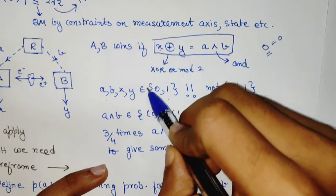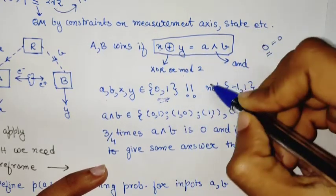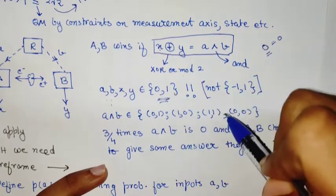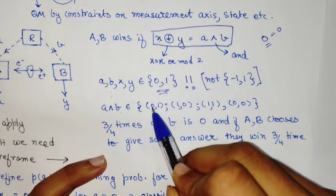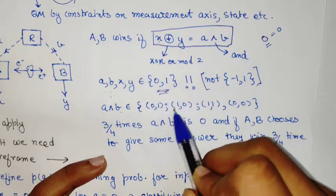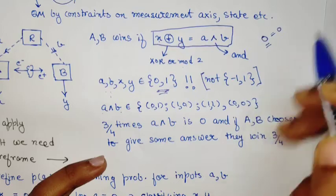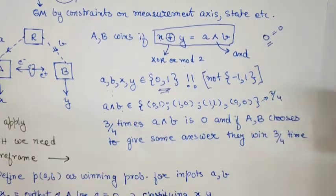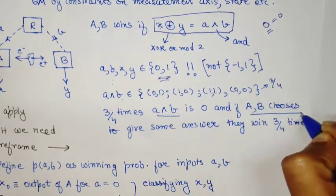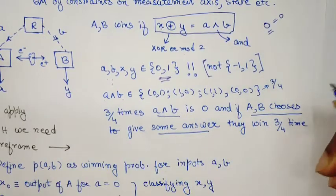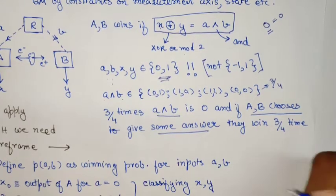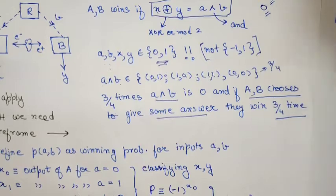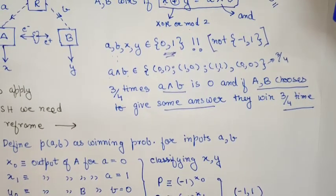More precisely, A, B, X, Y are variables that take value 0 and 1 — not minus 1 and 1 as in the CHSH inequality. A and B can take values 0 and 1: so A·B gives 1·0 = 0, 0·1 = 0, 1·1 = 1, and 0·0 = 0. We see 3 out of 4 times we get 0. Whenever we get 0 for A and B, Alice and Bob can choose the same answer — either both give 0 or both give 1 — and they will win. So 3 out of 4 times, if they always give the same answer, they will win. This is the maximum classical probability of winning.